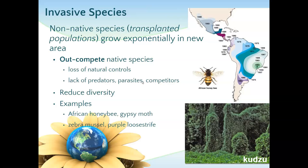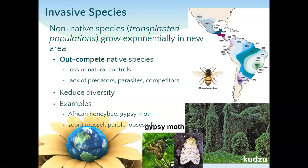Invasive species — non-native species — out-compete the native species. We have purple loosestrife in Lake Lansing, which is an invasive species. The zebra mussels in our Michigan lakes are a non-native species with no natural predators in the area, so they can out-compete and consume. All the organisms that have always lived here already have predators, while the invasive species don't. The kudzu can be found all over Florida now, growing over top of all of their own native vegetation.